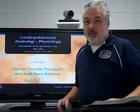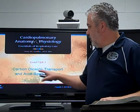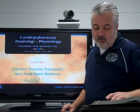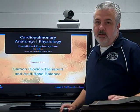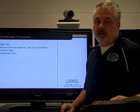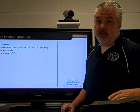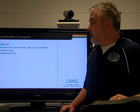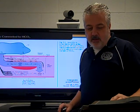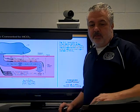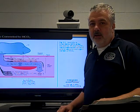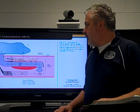As cells produce CO2, it has to be carried from the cells to the lungs. We're going to talk about carbon dioxide transport. There's an illustration in the book that depicts this — it's on page 293 of the new book and 273 in the old book — and this is essentially the primary thing you need to know about CO2 transport.